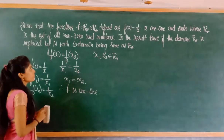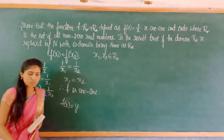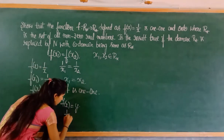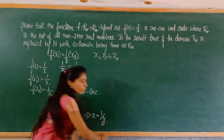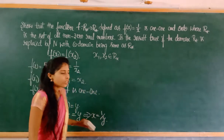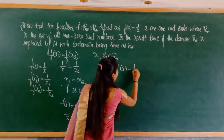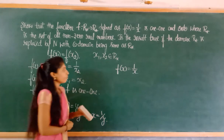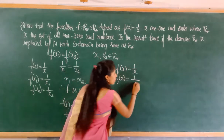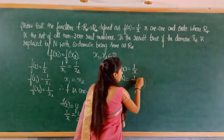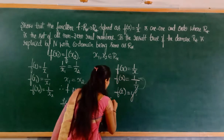Now we check if f is onto. The onto condition is f(x) = y. Since f(x) = 1/x, we get 1/x = y, so x = 1/y. Substituting back: f(1/y) = 1/(1/y) = y. The condition f(x) = y is satisfied. Therefore f is onto.